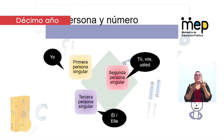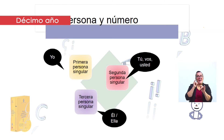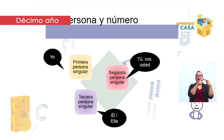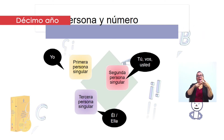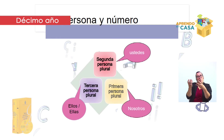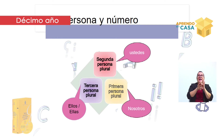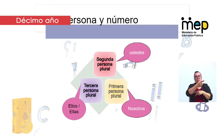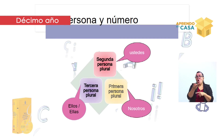¿Quedó claro, Laura? Sí, profe. Vamos entonces a la explicación de la materia. Los accidentes verbales son estos cambios. Aquí tenemos las personas: la primera persona es la que habla, la segunda es la que escucha, y la tercera es de quien se habla. Vamos a tener primera, segunda y tercera persona singular, y también primera, segunda y tercera persona plural. A la par de esas personas tenemos un pronombre que las identifica: ustedes, nosotros, ellos y ellas. Aunque hablamos español, en Costa Rica no usamos el 'vosotros', sino que lo cambiamos a 'ustedes'. Es importante que recuerden eso.